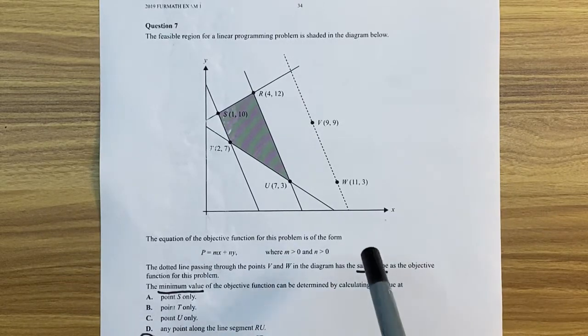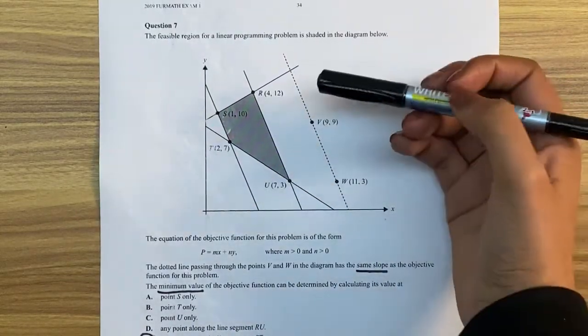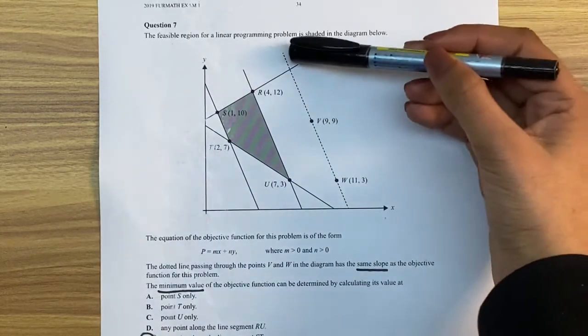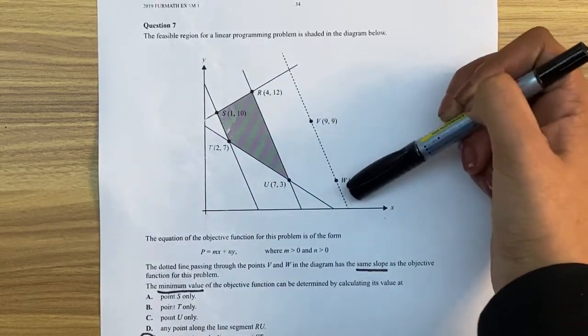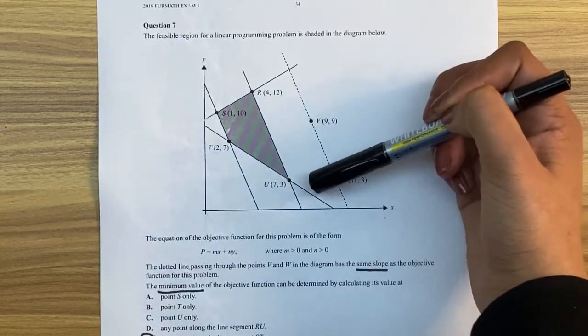If we were to use the intercept method, that would not really work. Well, actually it would work, but it would take a lot longer because then we'd have to find the equation of this line using these points, and then we'd have to substitute each of these numbers into that, and that would take a lot of time.